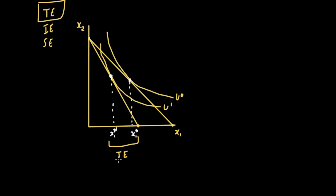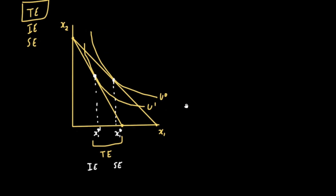The total effect tells us the gross effect a price change has on the quantity of that good. It can be broken down into two parts: the income effect and the substitution effect. To show what these are, it's easier to do this graphically.